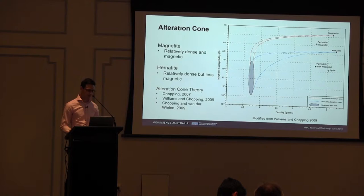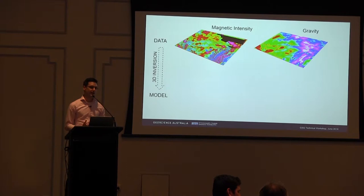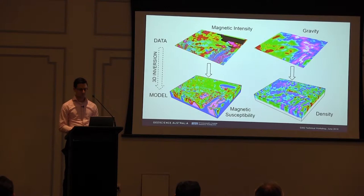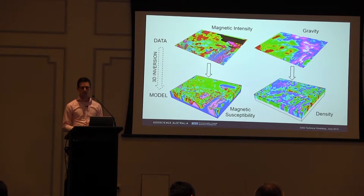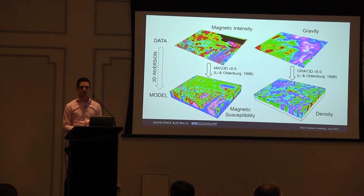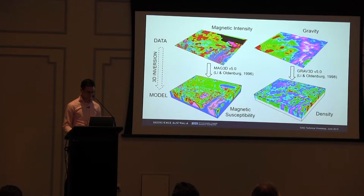The techniques we have to investigate subsurface properties — magnetic susceptibility and density — rely on Australia's regional coverage of freely available gravity and magnetic data sets. We take our magnetic intensity data and through 3D inversion turn that into a 3D model of magnetic susceptibility. Similarly, we take our gravity data and through 3D inversion produce a 3D model of density. We're using the University of British Columbia's geophysical inversion codes: MAG3D and GRAV3D version 5. Details of the data misfit and model objective function are available in Li and Oldenburg 1996 and 1998.